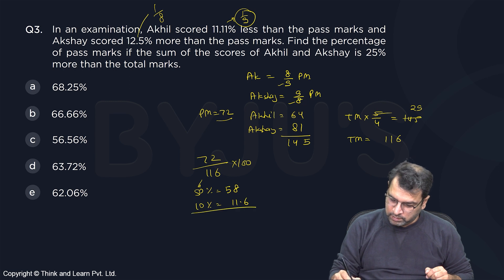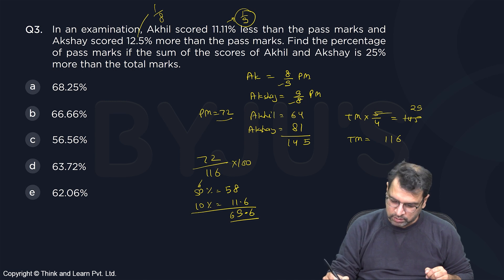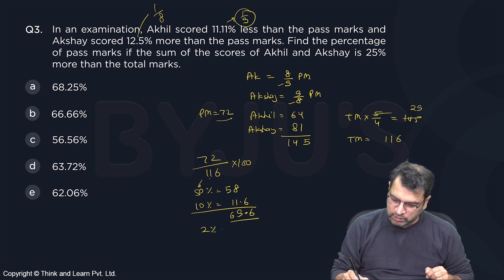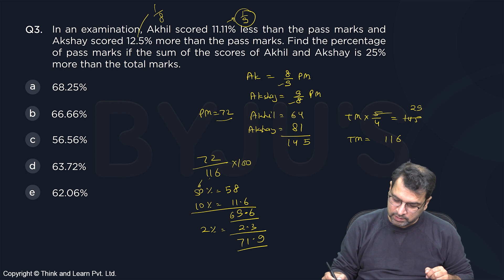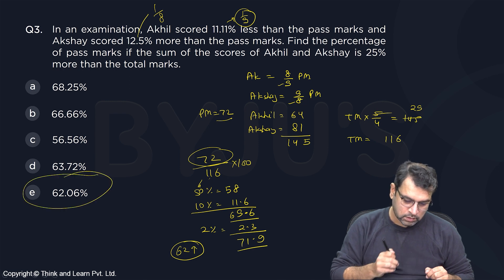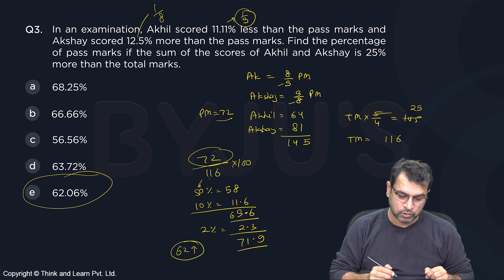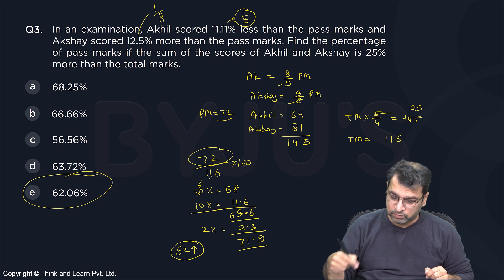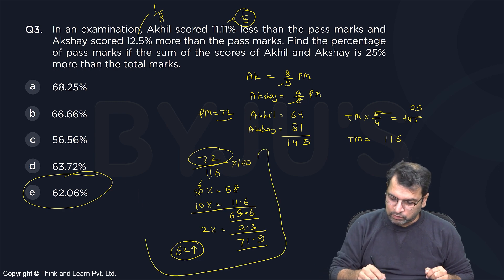Up to here I am getting 69.6. I need approximately 2.4 extra. So 1% is 1.16, and 2% will be 2.3. If you add this, you get 71.9 — approximately we have reached there. The answer should be slightly more than 62%. The clear option is option E, not D, because D would be slightly higher.